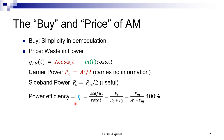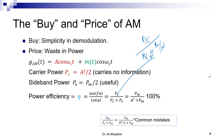The power efficiency is defined as how much useful power compared to total power — sideband power PS divided by carrier power PC plus sideband power PS. Substituting: PS equals PM over 2, PC equals A² over 2, so efficiency equals PM over (A² + PM). A common mistake is mixing and matching these terms — make sure to use PS over (PC + PS).